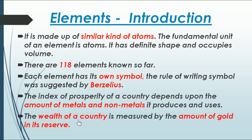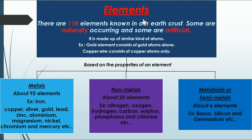So in this video, we are going to talk about elements. An element is made up of a single kind of atoms. There are 118 elements known, some naturally occurring and some artificial. For example, the gold element consists of gold atoms — just think about a 24-karat gold bar, all gold atoms form that gold element. Similarly, the copper wire used for electrical circuits is made up of only copper atoms, so we call it the copper element.